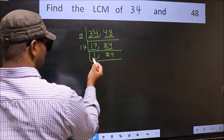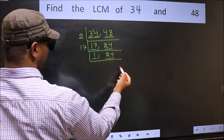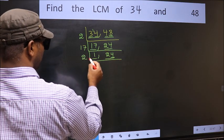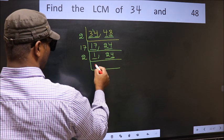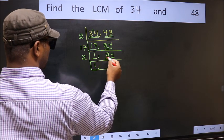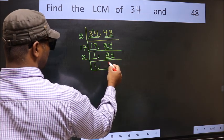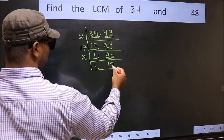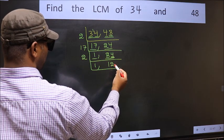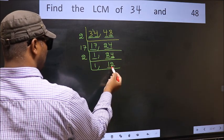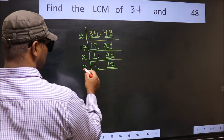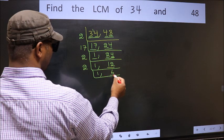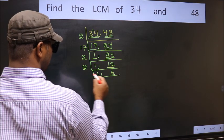Now we got 1 here, so focus on the other number 24. The last digit is 4, which is even, so take two. 24 divided by 2 gives 12. 12 divided by 2 gives 6.